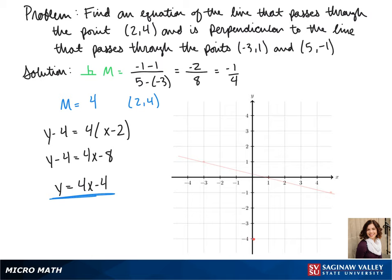On our graph, we can see the line that it's perpendicular to. To graph our line, we plot the y-intercept of -4, use our slope to find more points, and connect those points.